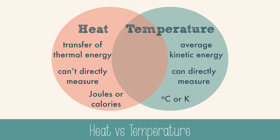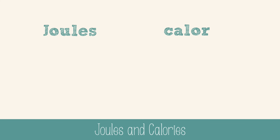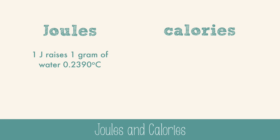For temperature, the units are Celsius or Kelvin. They really only have one thing in common, and that's that you can use temperature as part of a calculation to find heat. Heat is measured in joules or calories. One joule is the amount of energy to raise one gram of water 0.2390 degrees Celsius. But in food science, we use calories to measure energy. 4.184 joules makes up one calorie with a lowercase c.